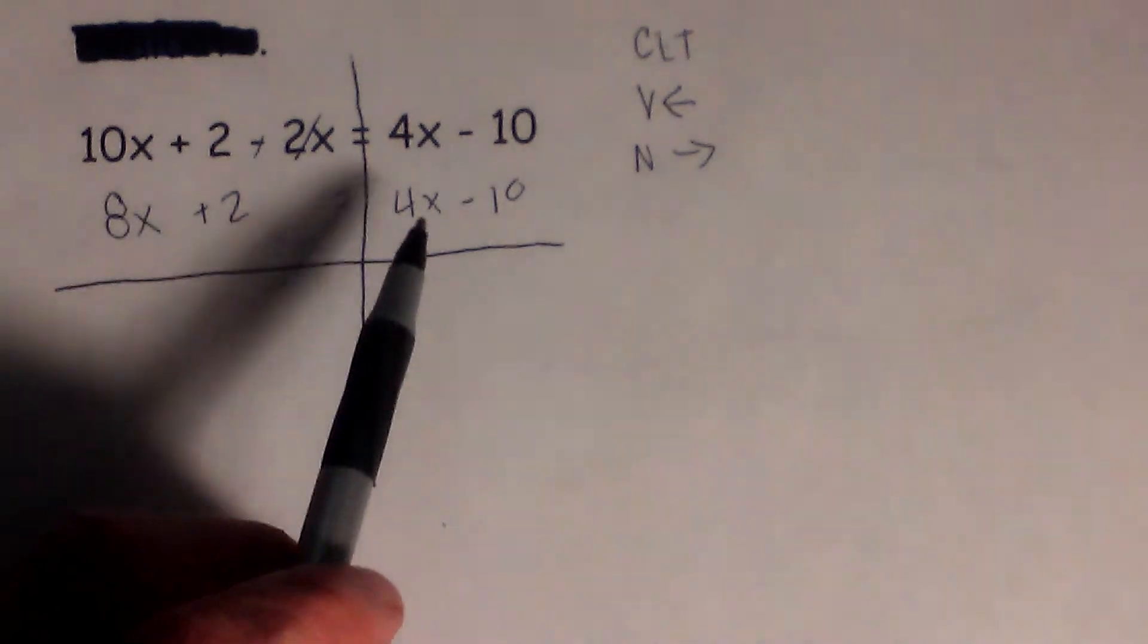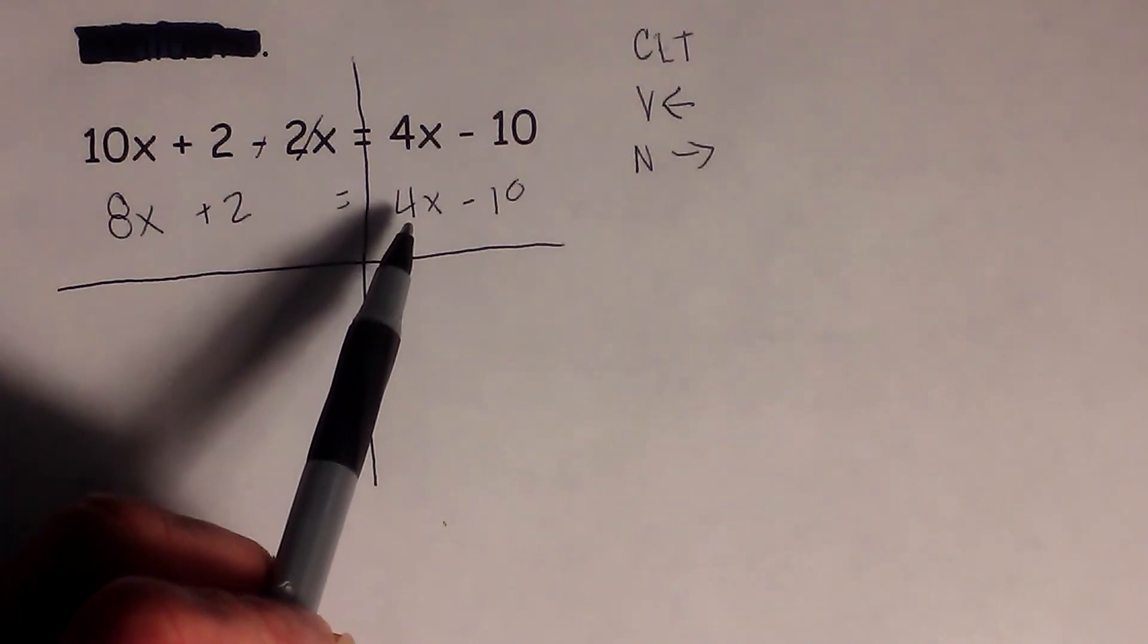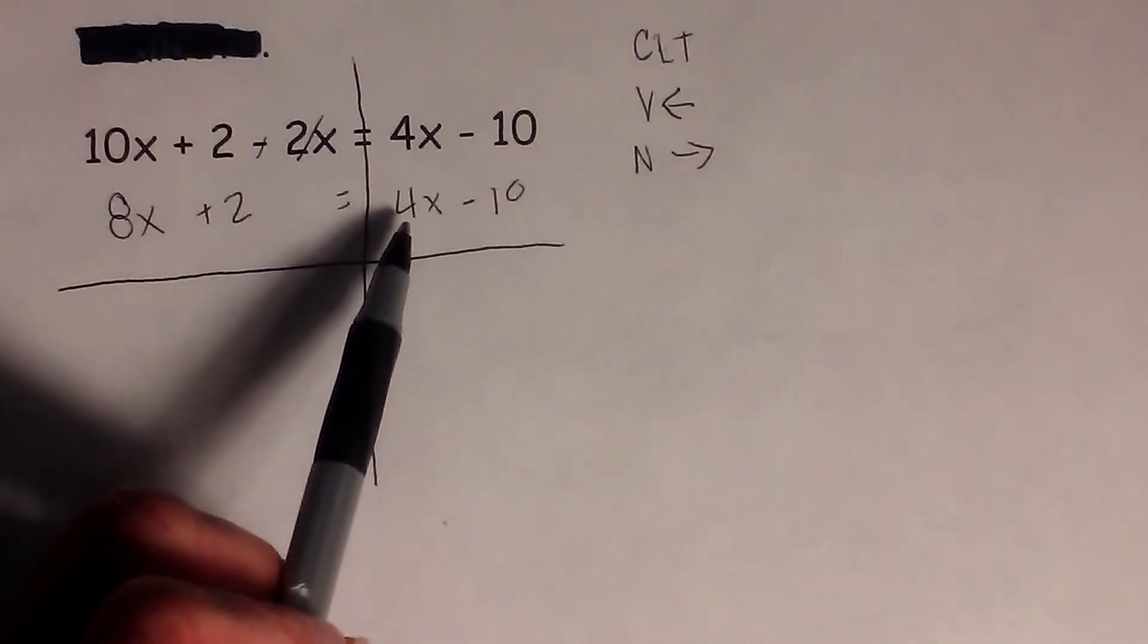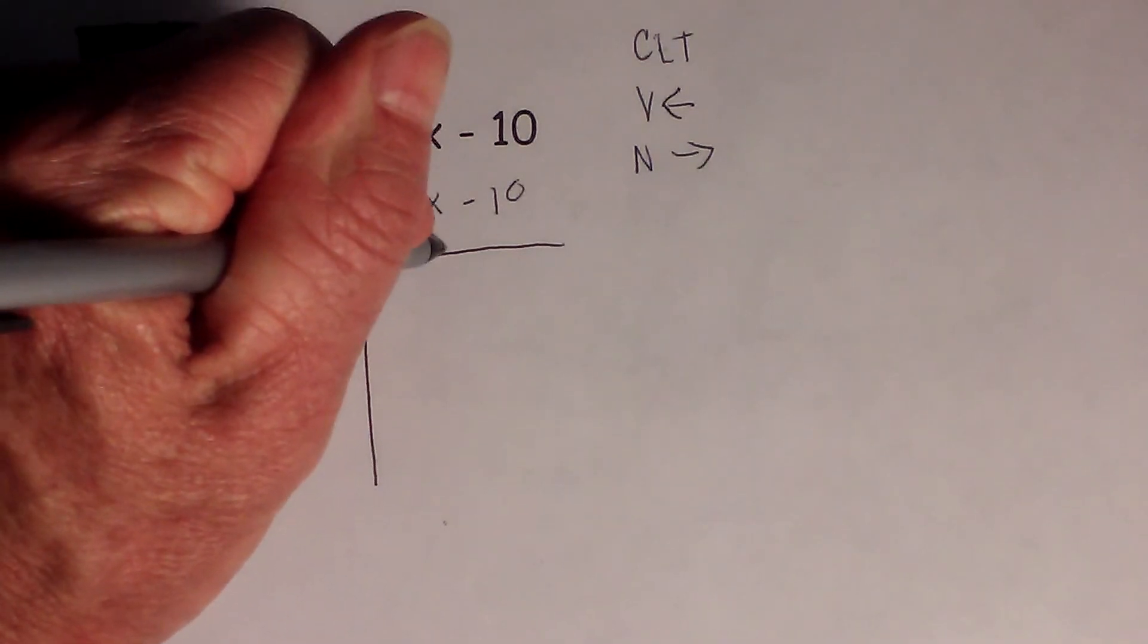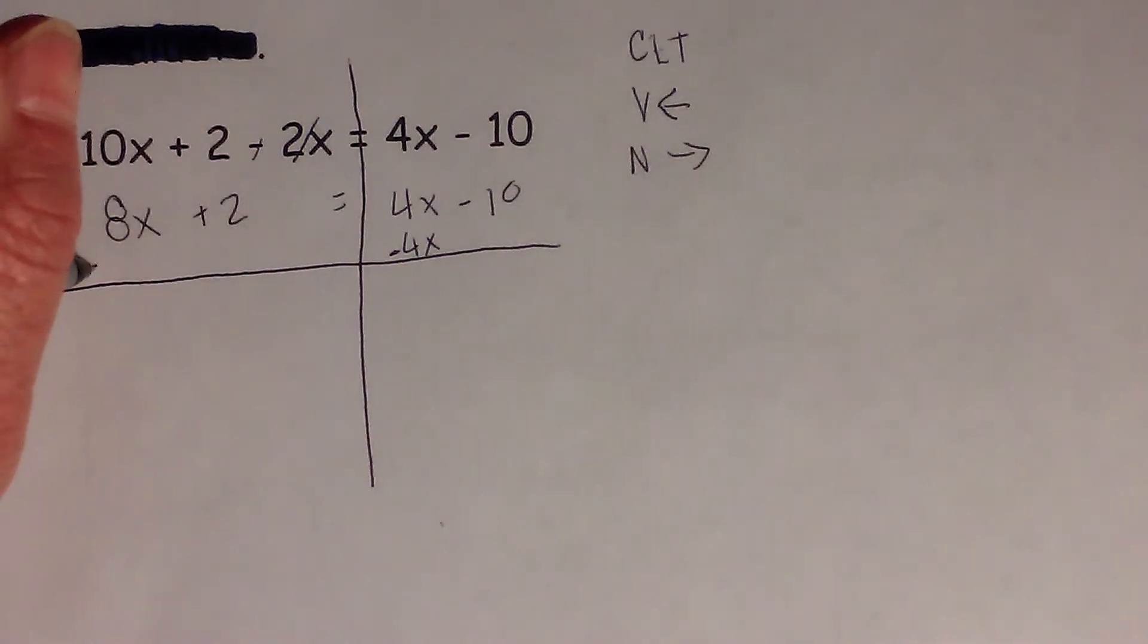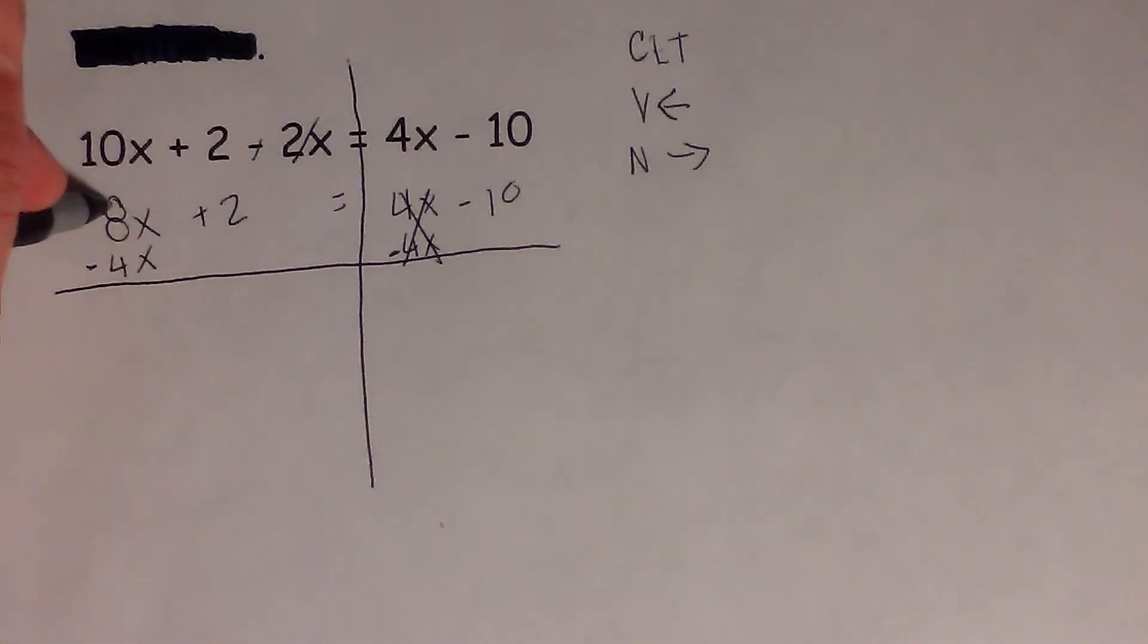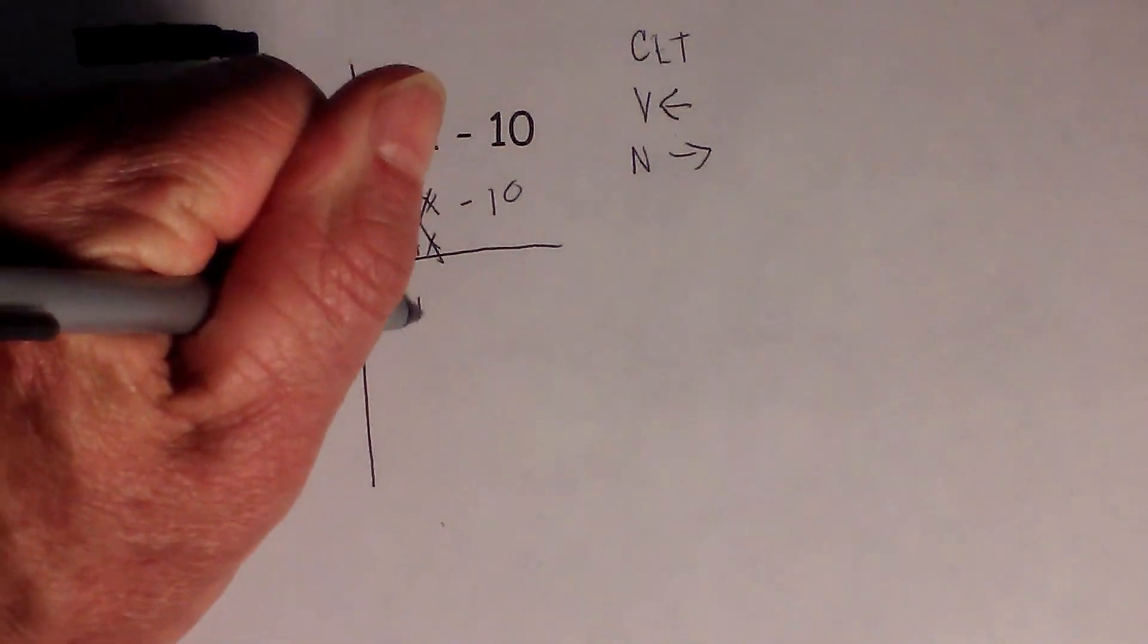Now we need to move the variables to the left of this line. We have 4x minus 10, and to get rid of the 4x, we need to subtract. I will subtract 4x. Remember, what you do on the right side of the equation, you must do to the left. These cancel, and 8x minus 4x is 4x plus 2 equals negative 10.